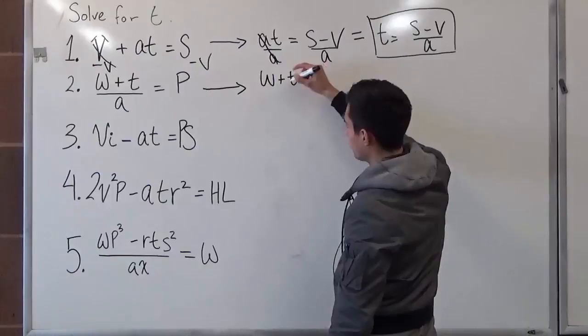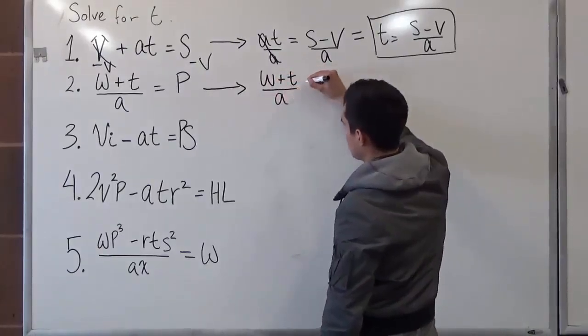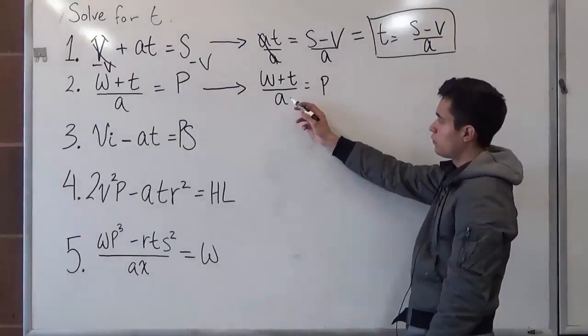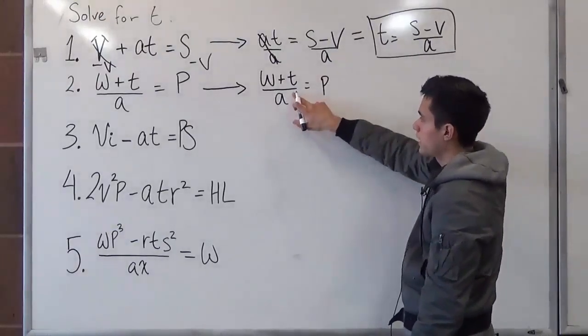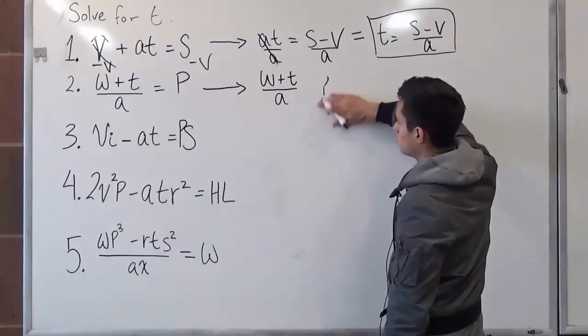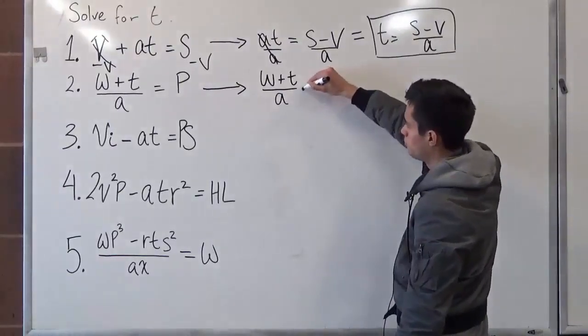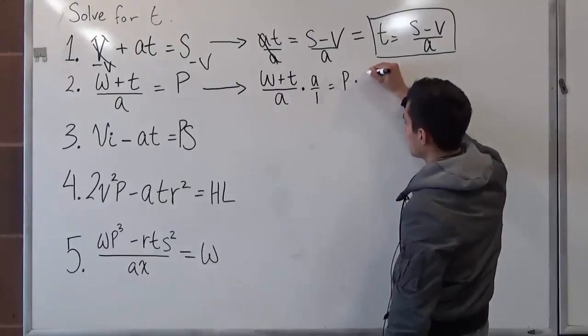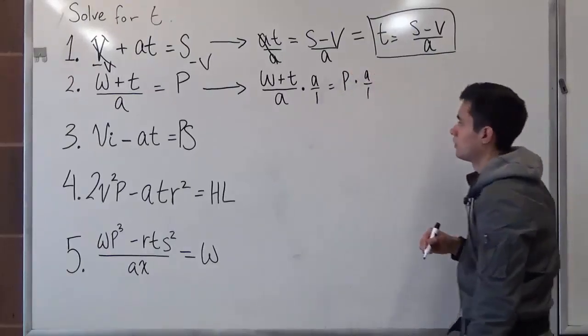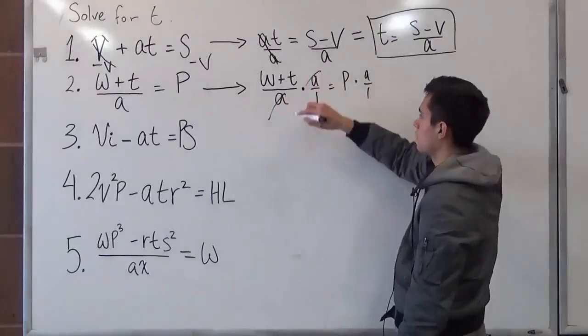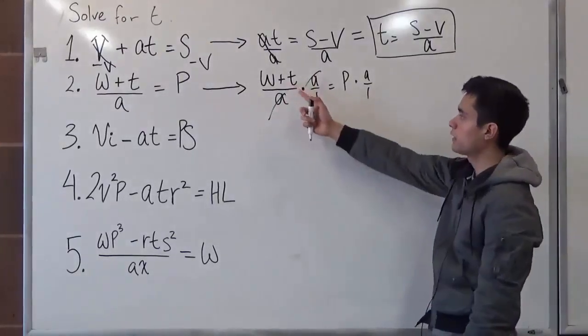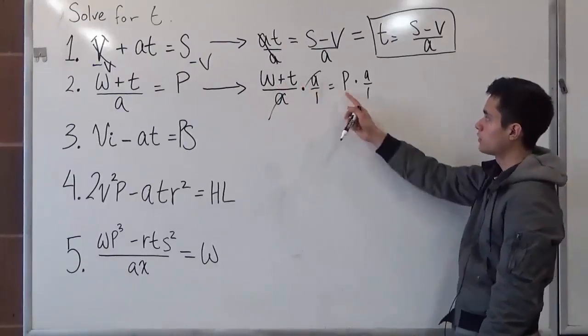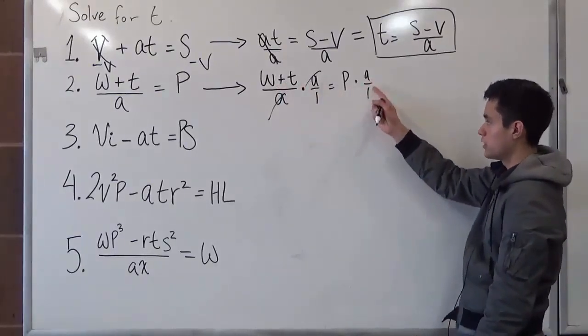So we set up our equation. And now to move this on that side, we have to multiply it because it's being divided. So here it can basically mean times a over 1 is equal to p times a over 1. This cancels out. And what you're left with is w plus t over 1, which is just w plus t, equals to p times a over 1, which is just a.